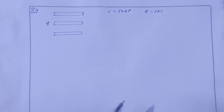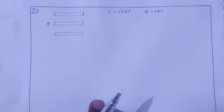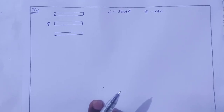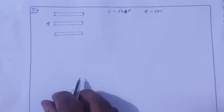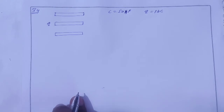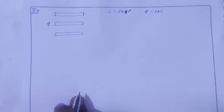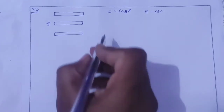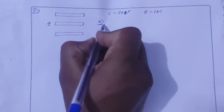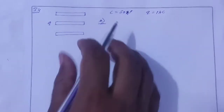Solution: Chapter 31, Capacitors, Question 34. The capacitance between the adjacent plates shown in the figure is 50 nanofarad. A charge of one microcoulomb is placed on the middle plate. We need to find: the charge on the outer surface of the upper plate, and the potential difference developed between the upper plate and the middle plate.